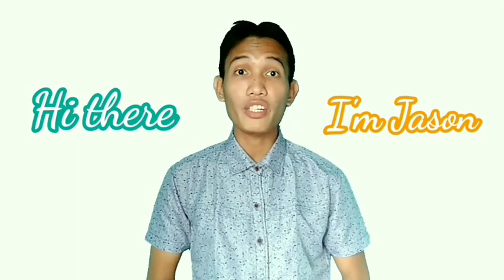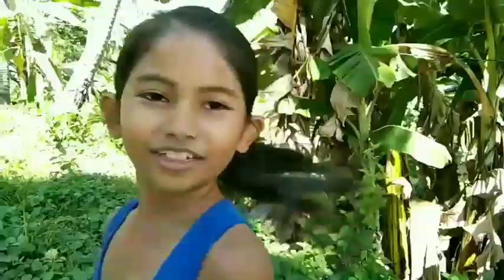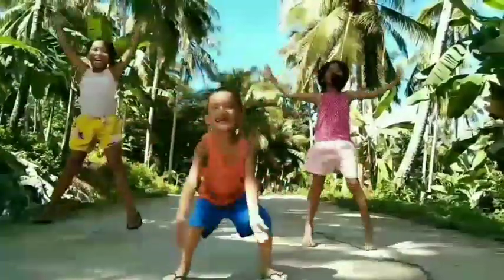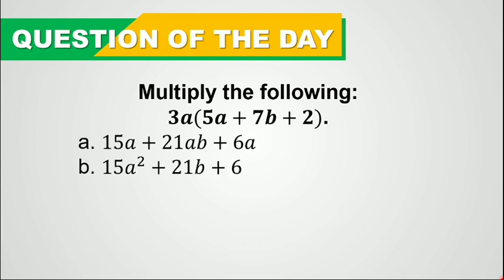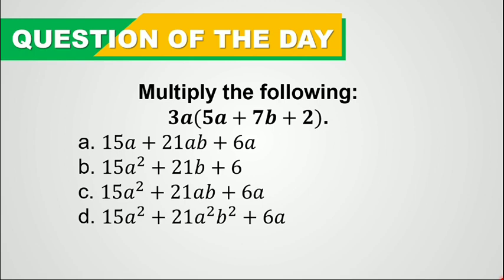Hi there, I'm Jason. What is the product when we multiply 3a by 5a plus 7b plus 2? Is it letter A: 15a plus 21ab plus 6a? Or letter B: 15a squared plus 21b plus 6? Or letter C: 15a squared plus 21ab plus 6a? Or letter D: 15a squared plus 21a squared b squared plus 6a? What is your answer?